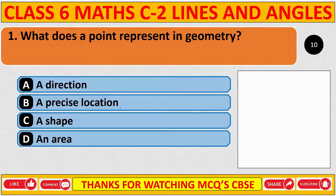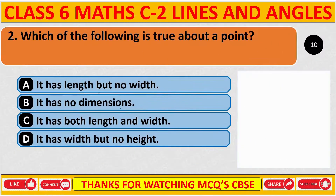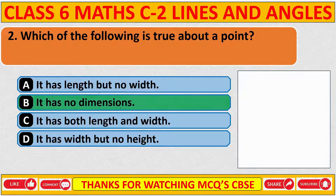What does a point represent in geometry? The correct answer is B: a precise location. Which of the following is true about a point? The correct answer is B: it has no dimension.